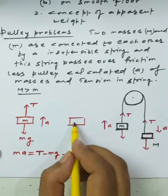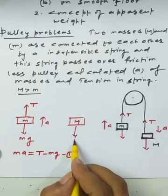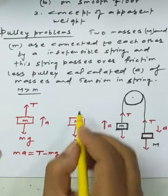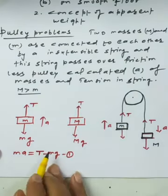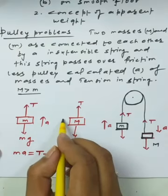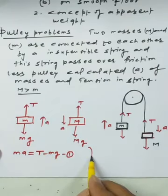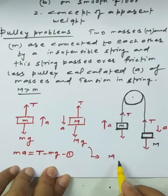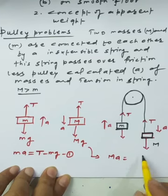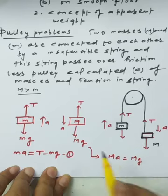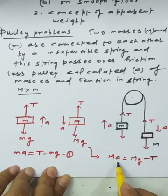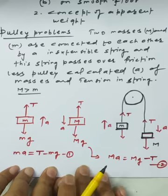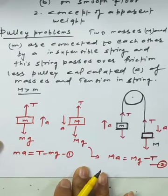For the FBD of capital mass M: Mg acts downward and tension T acts upward. The system moves downward with acceleration a. Applying Newton's second law gives equation 2: Mg - T = Ma.